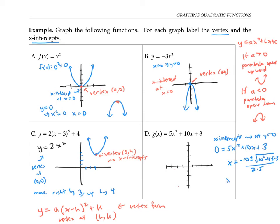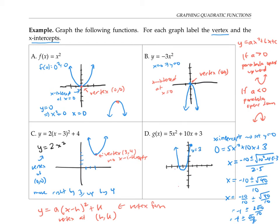That simplifies to x = −10/10 ± √40/10, which is −1 ± 2√10/10, or −1 ± √10/5. Since the square root of 10 is just a little bigger than 3, this works out to approximately −2/5 and −8/5. The parabola crosses the x-axis at those two points. Notice it also crosses the y-axis at y = 3, because plugging in x = 0 gives y = 3, so the y-intercept is at 3.